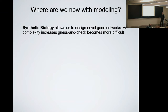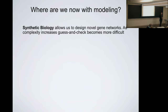Now, almost 20 years later, where are we with modeling? How do we use mathematical modeling to guide synthetic biology? We've come to a point where guess-and-check becomes very difficult when constructing synthetic systems. There is increasing complexity — systems constructed between different strains that communicate, so exhaustive checking becomes very difficult, and modeling to guide design becomes necessary from an engineering perspective.